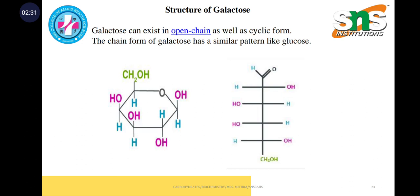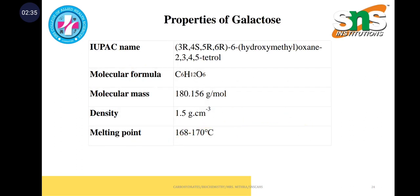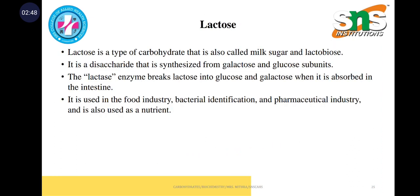The chain form of galactose follows a similar pattern to glucose. Coming to the properties: molecular formula C6H12O6, molecular mass is 180.156, and the melting point is 168 to 170 degrees Celsius.